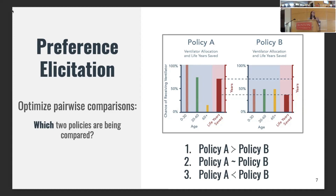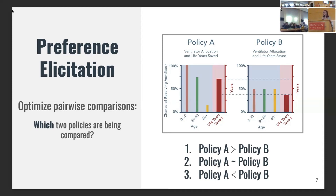We're not imposing any judgment on what is the right preference to have — people have preferences and we just want to figure out what those are. Whenever someone is presented with a comparison, they can say they prefer policy A, they're indifferent between the two, or they prefer policy B. In the robust optimization algorithm, the decision is which policy should appear as A and B so that we can strategically learn preferences. We have some policies and we want to pick the two that will show up in that pairwise comparison.